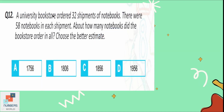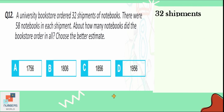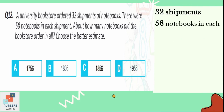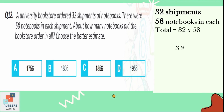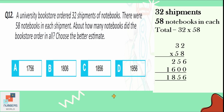Question number 12: a university bookstore ordered 32 shipments of notebooks with 58 notebooks in each shipment. About how many notebooks did the bookstore order in all? Multiplying 32 by 58, the university ordered 1856 notebooks. That is our option C.